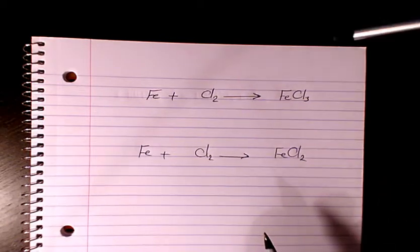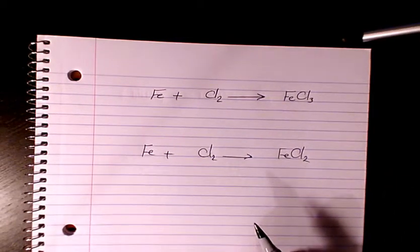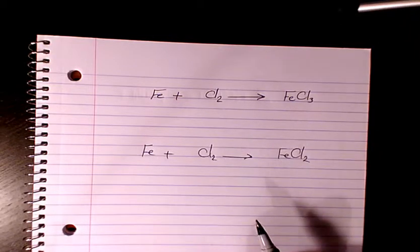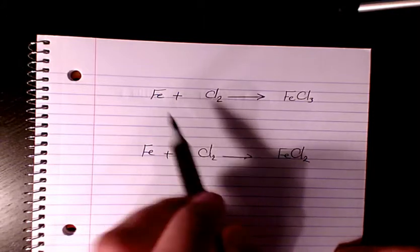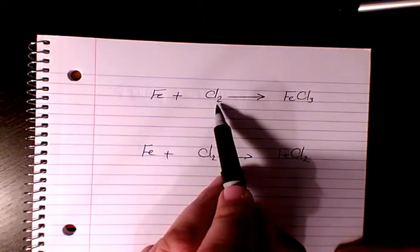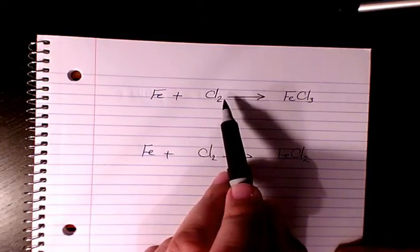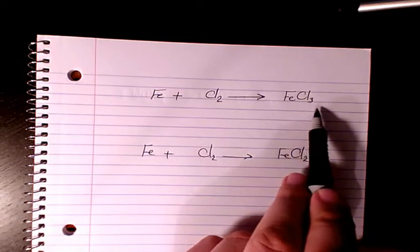What's up guys, this is Massey, welcome to my channel. In this video I want to show you how to balance these two equations. We have Fe, which is iron, plus chloride, which is Cl2 or chlorine, it's going to give you FeCl3.